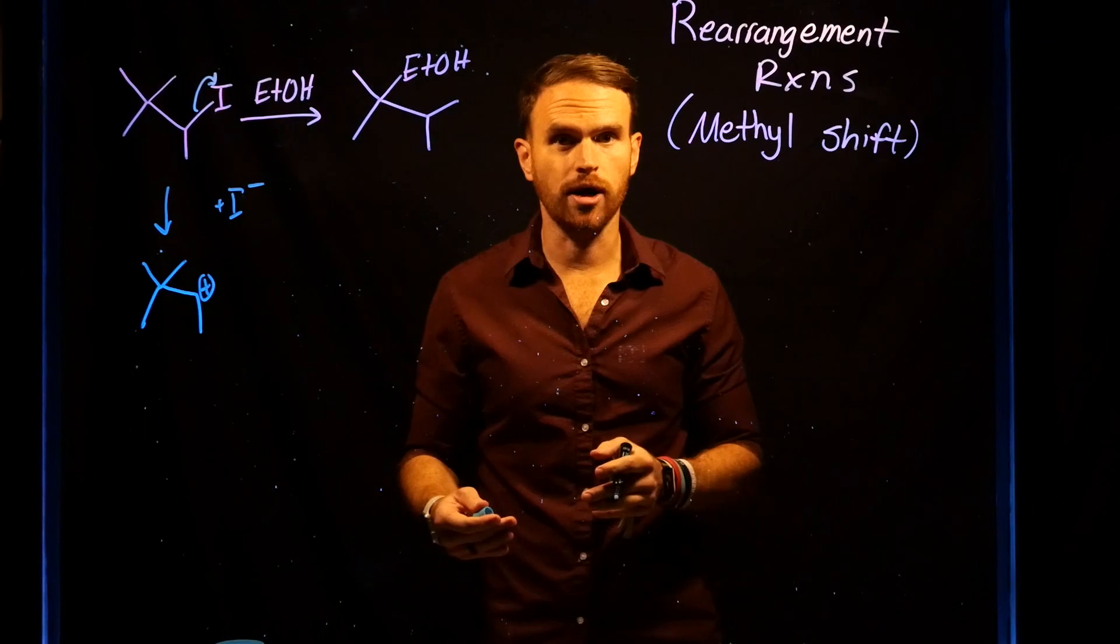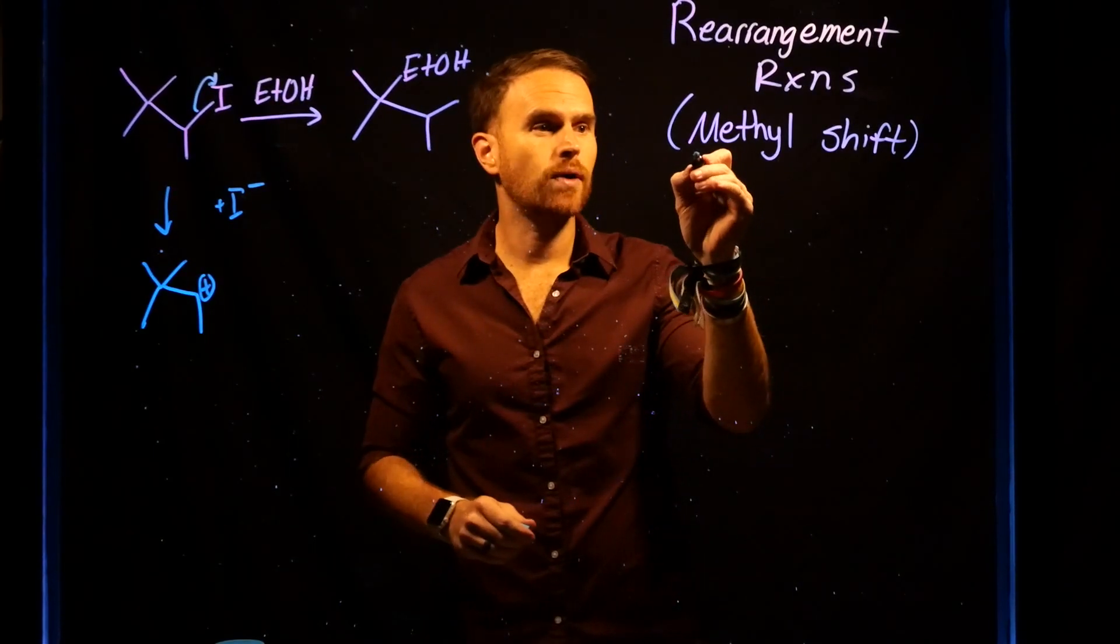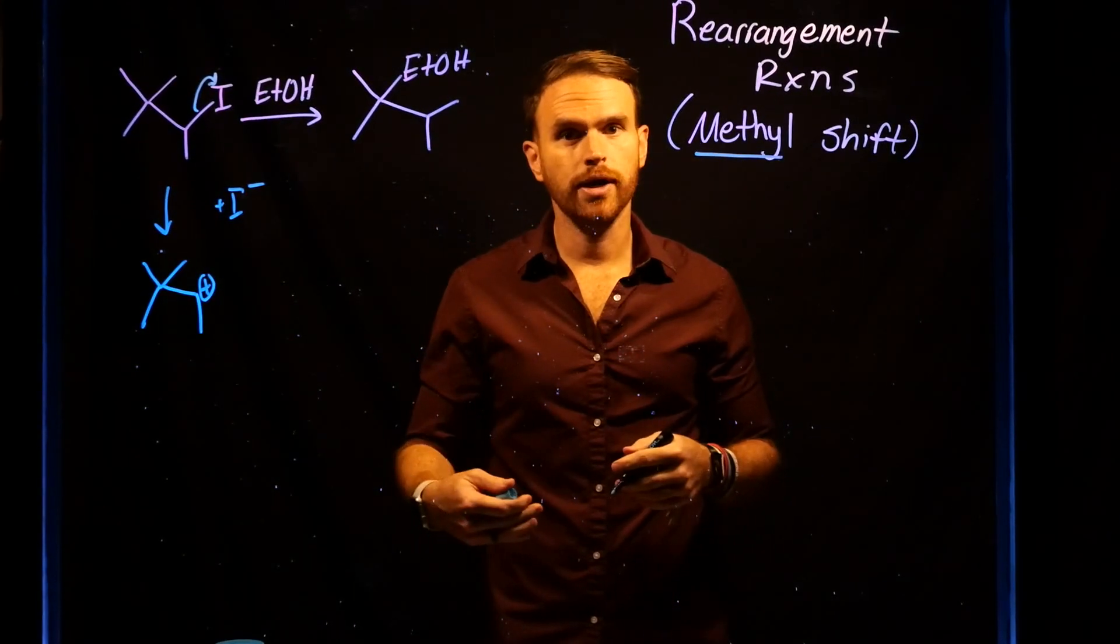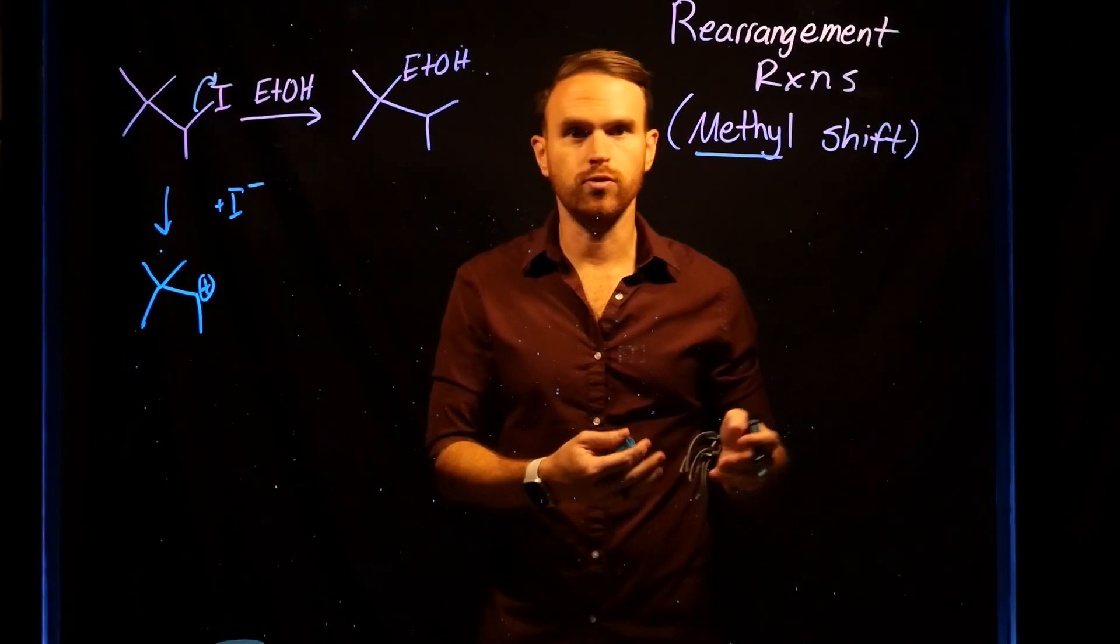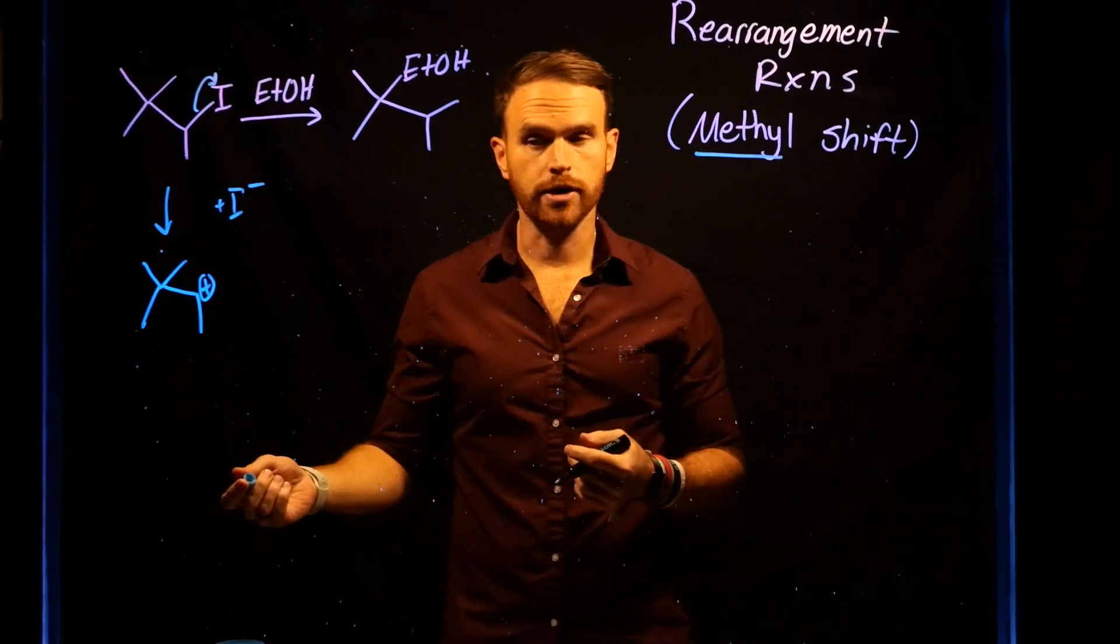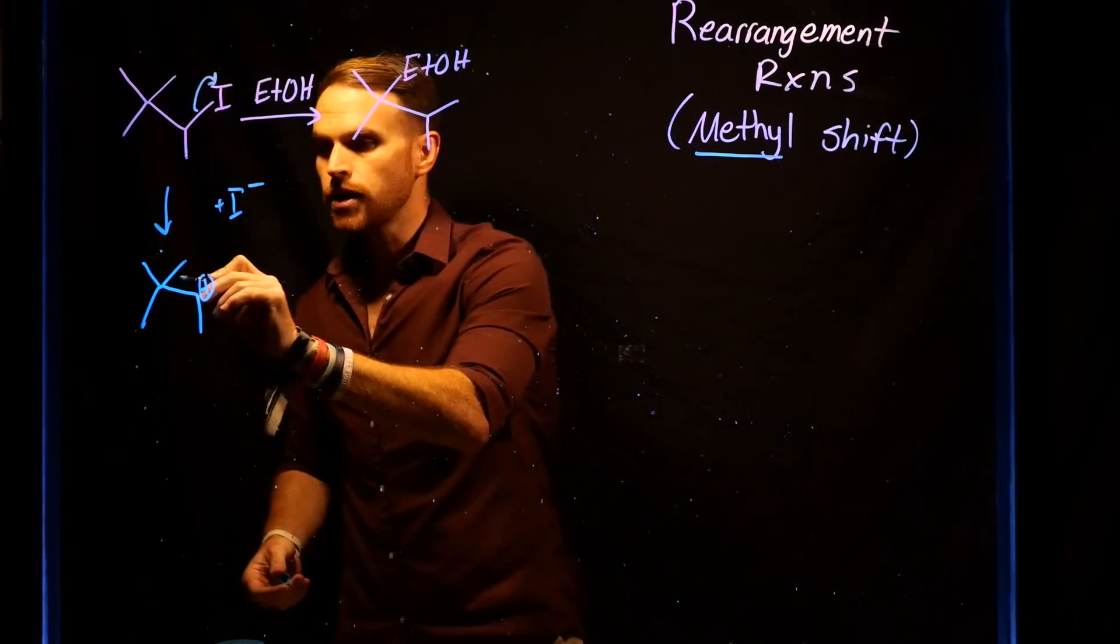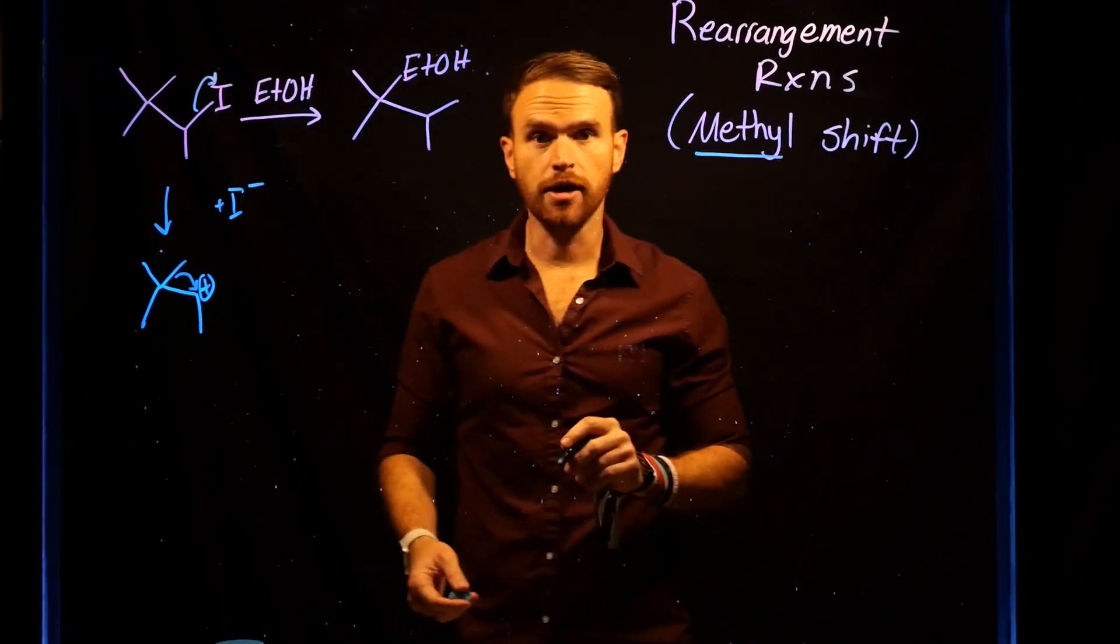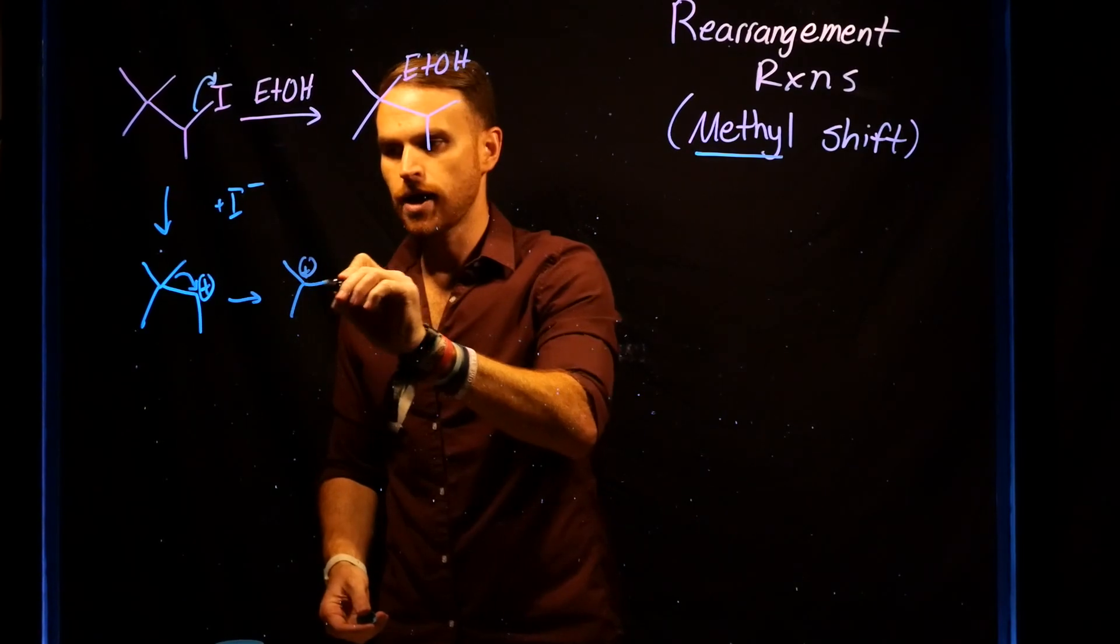And just as I described previously in the video, where you can have a hydride shift, you can also have things like a methyl shift or even an aryl shift to generate a more stable carbocation and subsequently follow through with the rest of the mechanism. Since we have learned that a tertiary carbocation is more stable than a secondary carbocation, what's actually going to happen is that this methyl group is going to shift to generate a brand new tertiary carbocation.